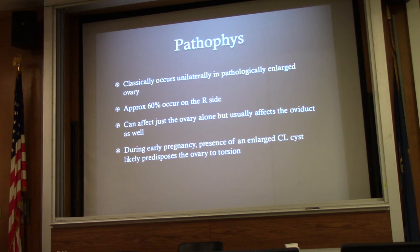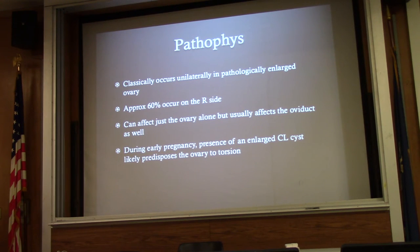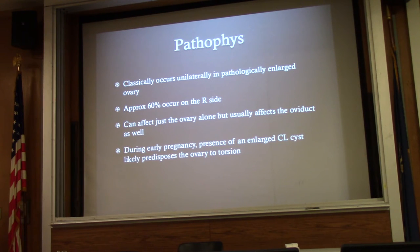During early pregnancy, you can have an enlarged corpus luteum, which predisposes to torsion. This can occur pretty much in all age groups. In children, either a lack of mesosalpinx or a very enlarged fallopian tube can cause it. In patients who have undergone tubal ligation and have adhesions, that can also cause twisting of the ovary on itself.